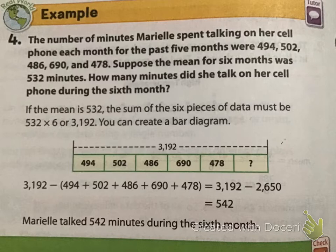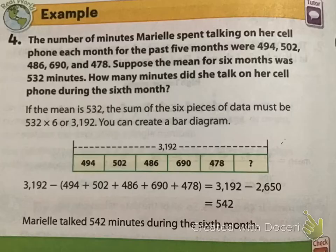The number of minutes Mariel spent talking on her cell phone each month for the past five months were 494, 502, 486, 690, and 478. Suppose the mean for six months was 532 minutes. How many minutes did she talk on her cell phone during the sixth month? So, this is when we take a reverse approach to it. Here, we know the mean. We just don't know one of our numbers.